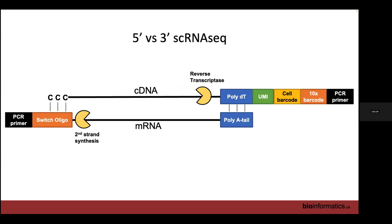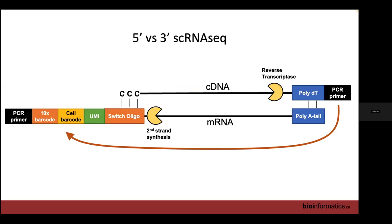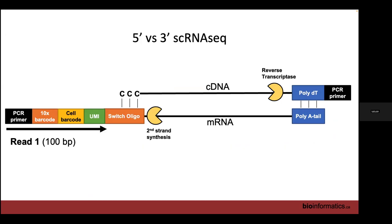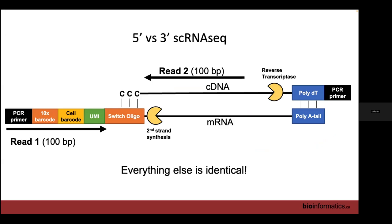For five-prime sequencing, read one still gets all our barcodes, and read two is at the five-prime end of our transcript. Everything else is exactly the same. Any bias due to poly-T/poly-A selection is still going to be there, and any bias due to not reverse transcribing the entire mRNA will still be there.